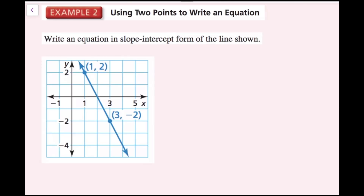For this example, we're going to write an equation in slope-intercept form of the line shown. There's actually more than one way to do this — I'll use point-slope form first, and then slope-intercept form. I'm going to start with my point-slope form: y minus y1 equals m times the quantity (x minus x1). I need to find the slope.